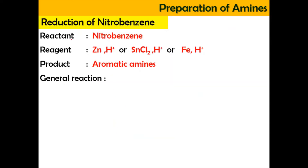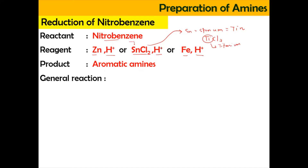For the reduction of nitrobenzene, the reactant we need is nitrobenzene. The reagents needed to reduce nitrobenzene are zinc in acidic condition, tin(II) chloride (SnCl2) in acidic condition, or iron (Fe) in acidic condition. Sn refers to stannum, which is equivalent to tin. So the reactant nitrobenzene, when reacted with any of these three reducing agents, will produce an aromatic amine known as aniline.